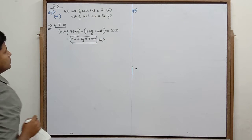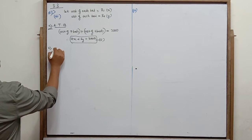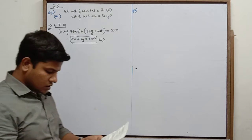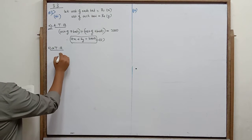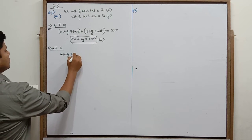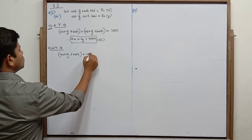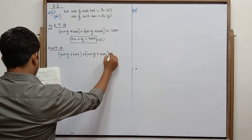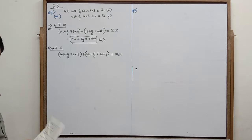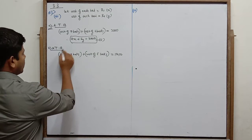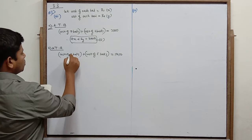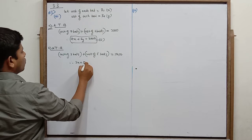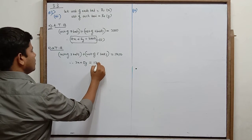Again according to the question, three bats and five balls cost rupees 1750. Cost of three bats plus cost of five balls equals 1750. Therefore three x plus five y is equal to 1750. Call this equation 2.